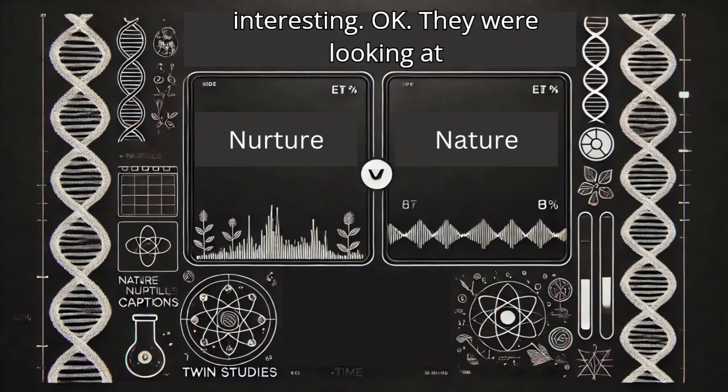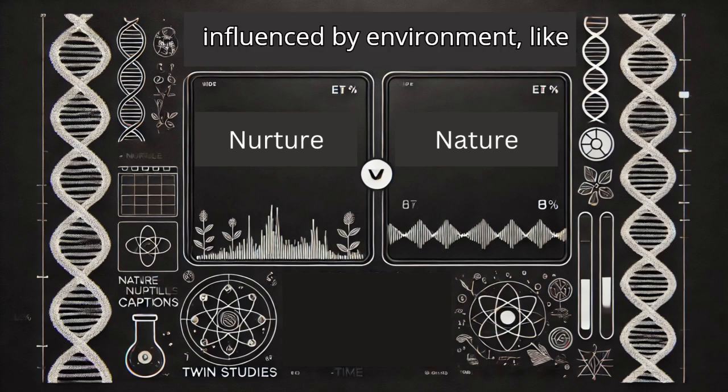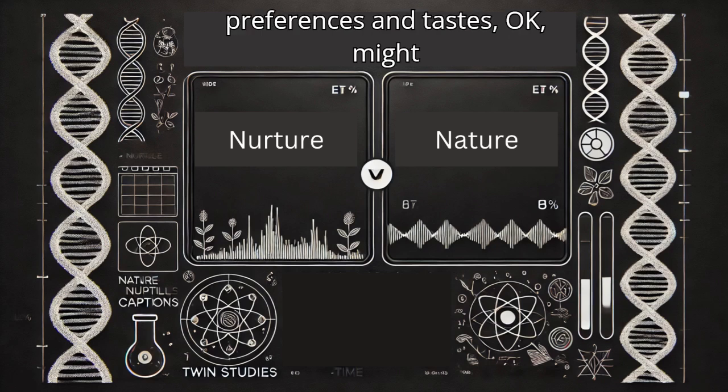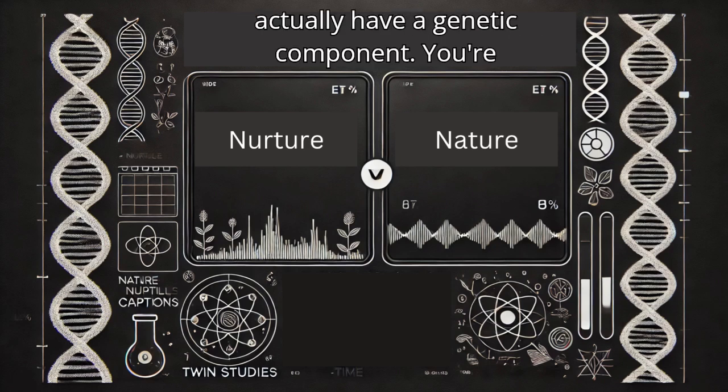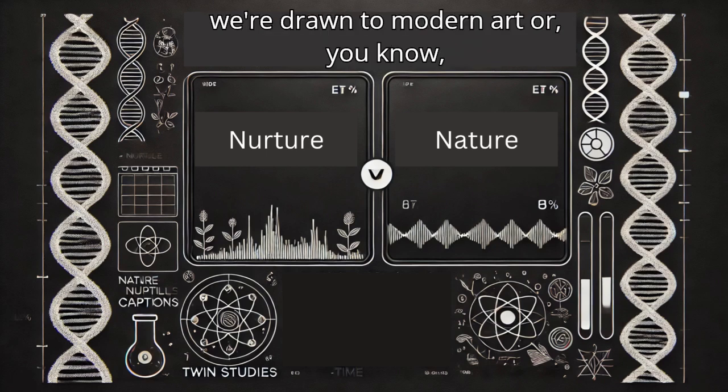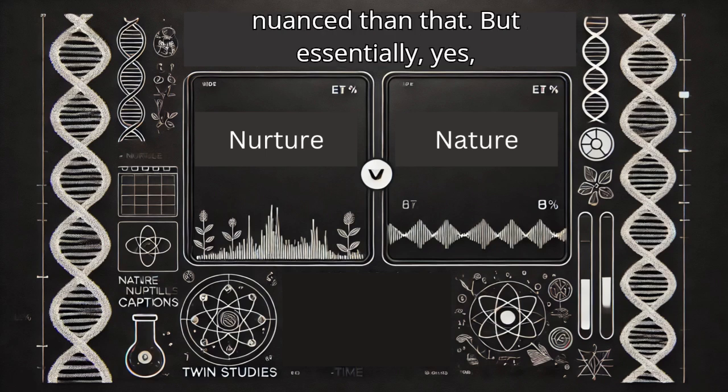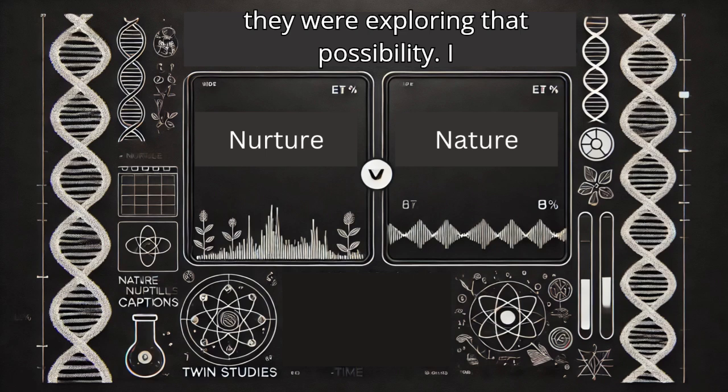That's where things get really interesting. They were looking at whether things we might consider to be influenced by environment, like preferences and tastes, might actually have a genetic component. You're saying our genes could influence whether we're drawn to modern art or antique maps. It might be a bit more nuanced than that, but essentially, yes. They were exploring that possibility.